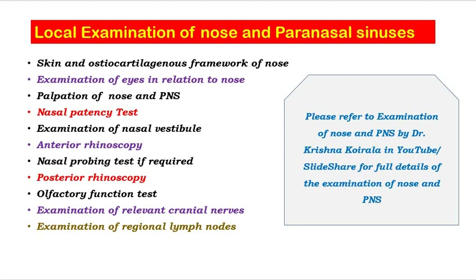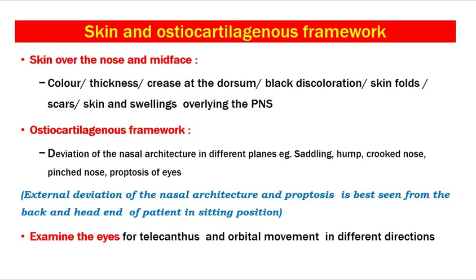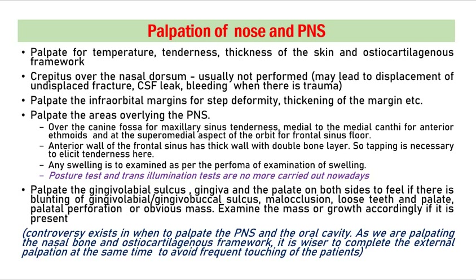Now coming to local examination of nose and paranasal sinuses, please refer to examination of nose and PNS for details. I will show a few slides on examination of nose and PNS, skin and osteocartilaginous framework. You have to look at the skin about the nose and mid-face; the osteocartilaginous framework is to be looked for. One important point is that external deviation of the nose and proptosis are best seen from the back and top of the patient in sitting position. The eyes are to be examined for telecanthus and orbital movement in different directions. You have to palpate the nose and PNS also, and it is wiser to complete the external palpation at the same time to avoid frequent touching of the patient.